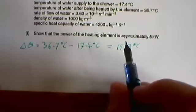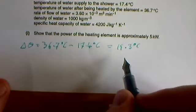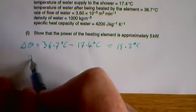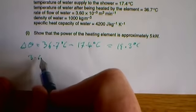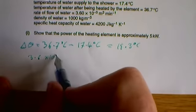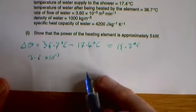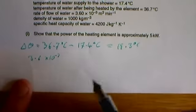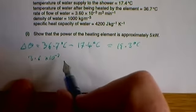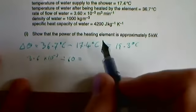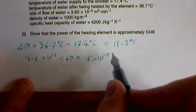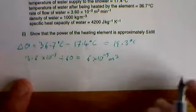How much water is getting raised that amount? We've got 3.6 times 10 to the minus 3 cubic meters of water passing through every minute. So we're going to divide that by 60 and that gives us 6 times 10 to the minus 5 cubic meters.